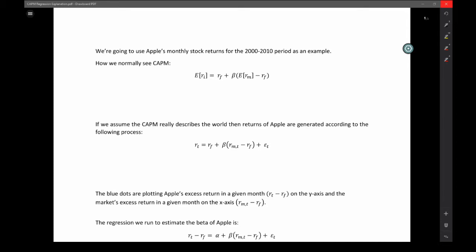The way we normally see CAPM is this formula right here. We're saying that the expected return of stock i is equal to the risk-free rate plus beta times the market risk premium. So the entire market risk premium is that entire chunk in parentheses, which is the expected market return minus the risk-free rate.